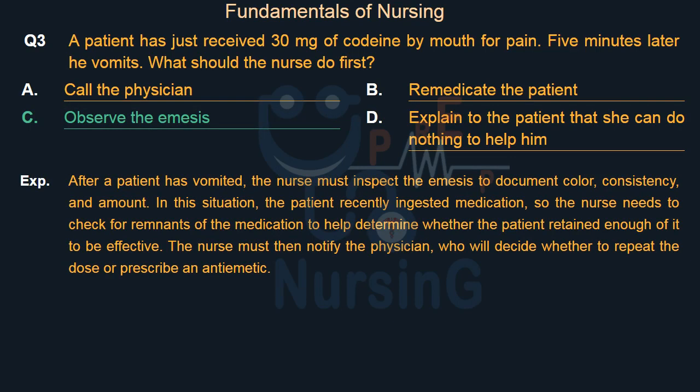After a patient has vomited, the nurse must inspect the emesis to document color, consistency, and amount. In this situation, the patient recently ingested medication, so the nurse needs to check for remnants of the medication to help determine whether the patient retained enough of it to be effective. The nurse must then notify the physician, who will decide whether to repeat the dose or prescribe an anti-emetic.